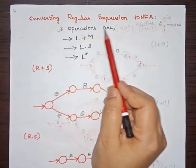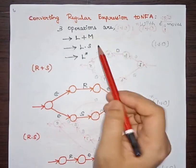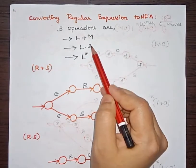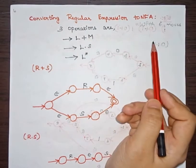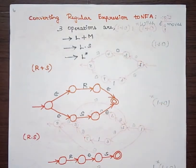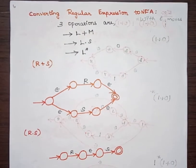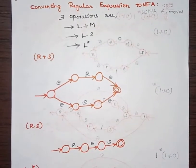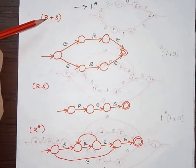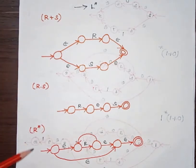The three basic operations here we have are union, concatenation, and closure. With these three basic operations we are going to convert the regular expression into NFA. Before converting, we should know the fundamentals used to convert a regular expression to NFA with epsilon.